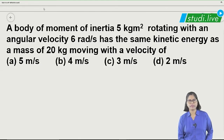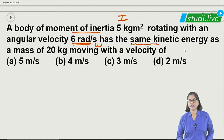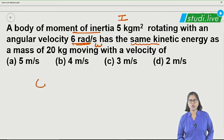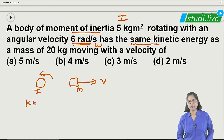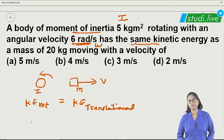The next question: a body with moment of inertia I equals 5 kg·m² rotating with angular velocity omega has the same kinetic energy as a mass moving with linear velocity v. So there are two bodies — one rotating and one moving linearly. Their kinetic energies are equal.